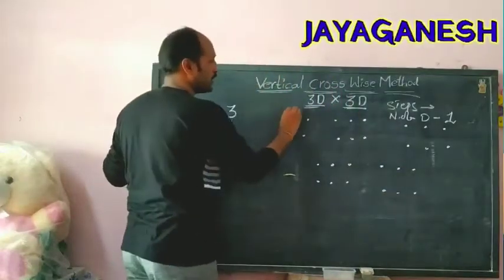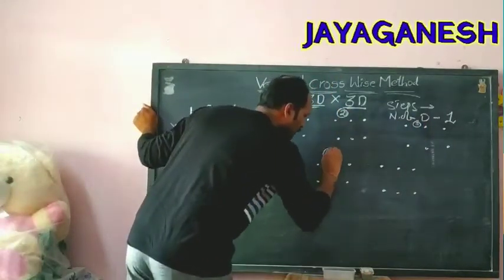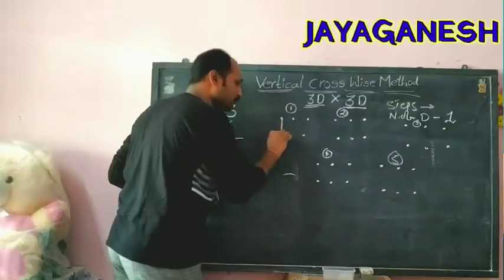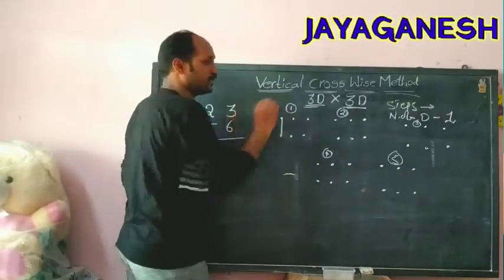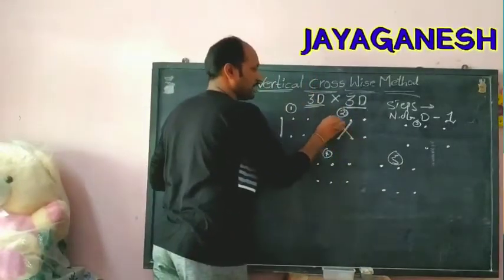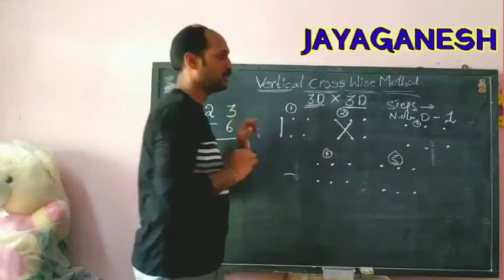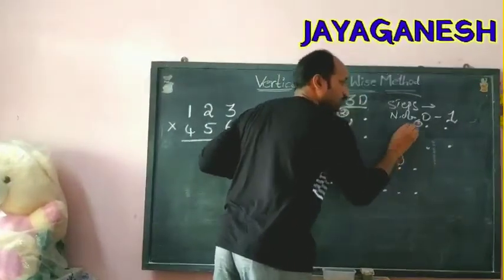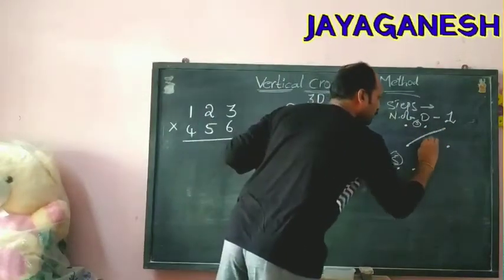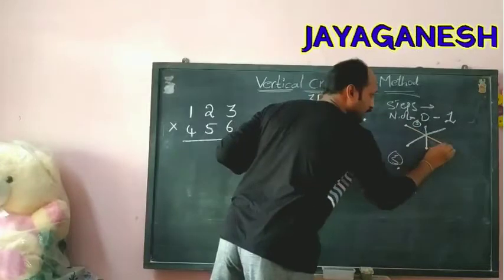I have written the five steps: first step, second step, third step, fourth step, and fifth step. In the first step, you are going to multiply these two outermost numbers. Then the second step: this number already multiplied with this, then you go with the second number and this number is going to multiply with the first number — so two numbers are involved in step two.